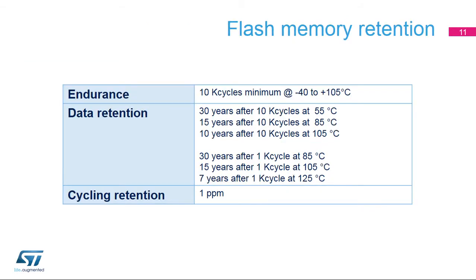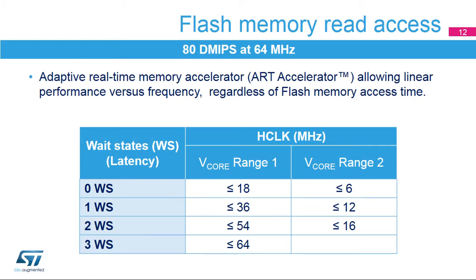The flash memory is guaranteed for a minimum of 10,000 cycles up to 105 degrees Celsius. Data retention is 30 years after 10,000 cycles at 55 degrees Celsius, 15 years after 10,000 cycles at 85 degrees Celsius, and 10 years after 10,000 cycles at 105 degrees Celsius. It is 30 years after 1,000 cycles at 85 degrees Celsius, 15 years after 1,000 cycles at 105 degrees Celsius, and 7 years after 1,000 cycles at 125 degrees Celsius.